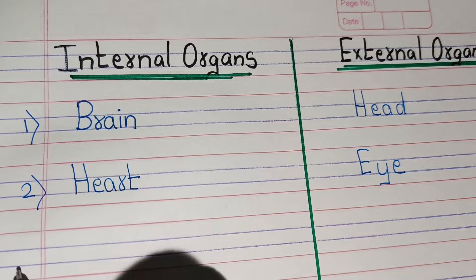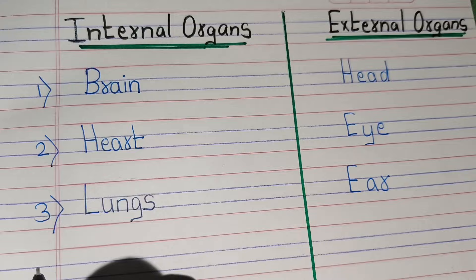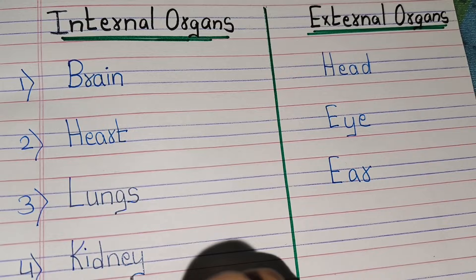Third, internal organ name: lungs. And external organ name: ear. Fourth, internal organ name: kidney. And external organ name: shoulder.